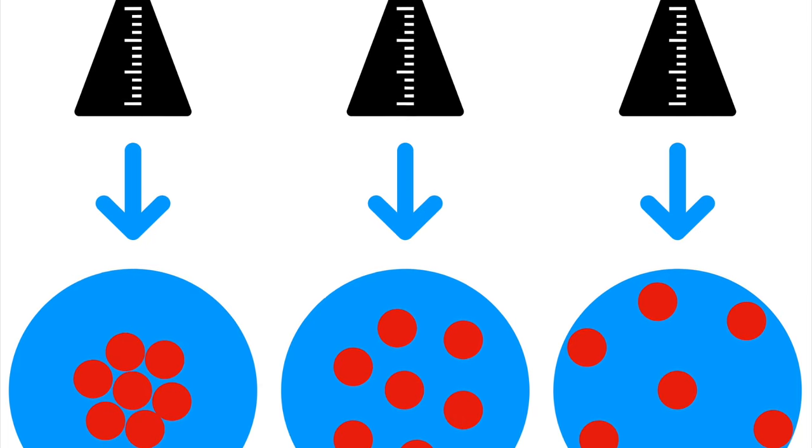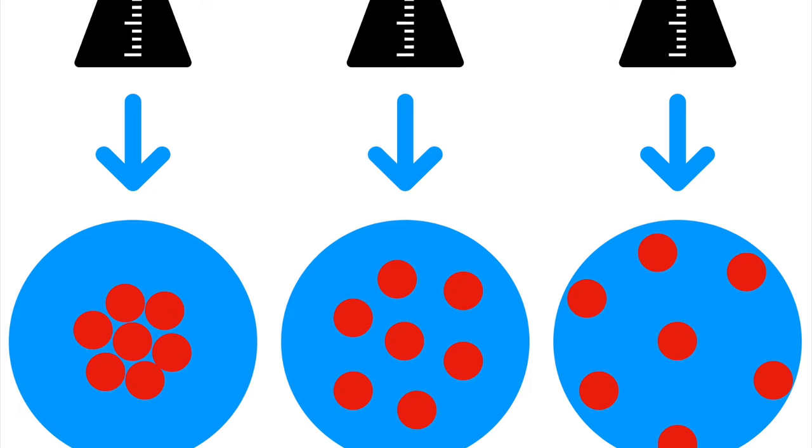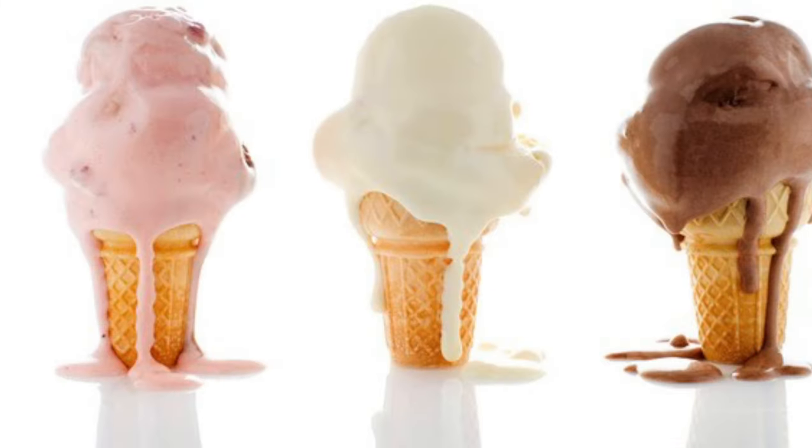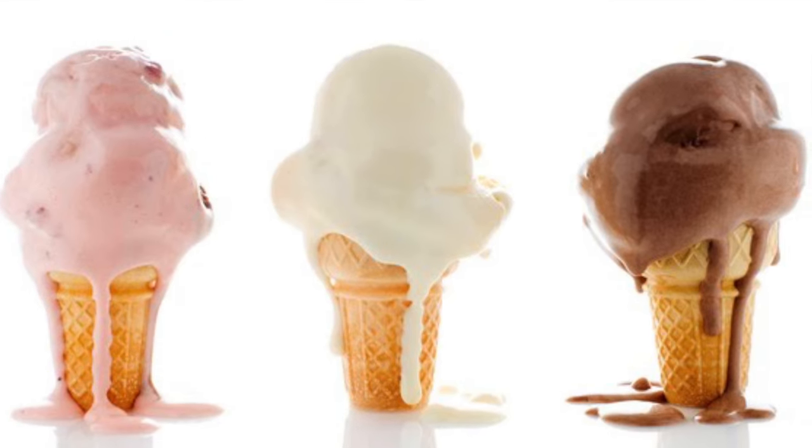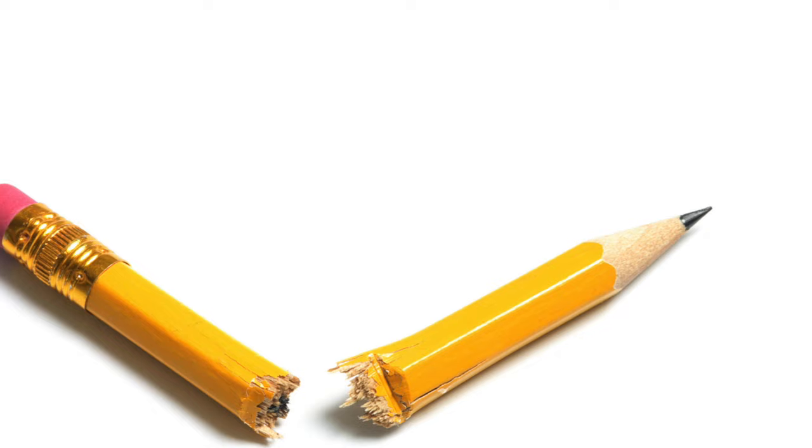A physical change involves changes to matter that can be observed but do not change the identity of the substances. In other words, the atoms are not rearranged; they just change in state.